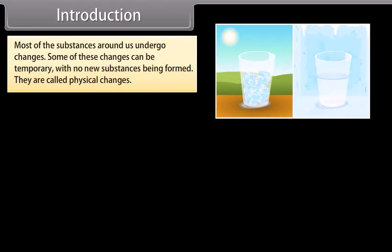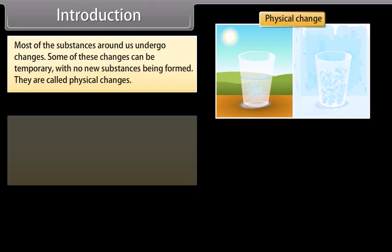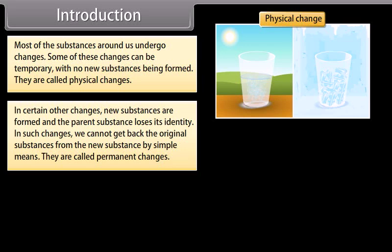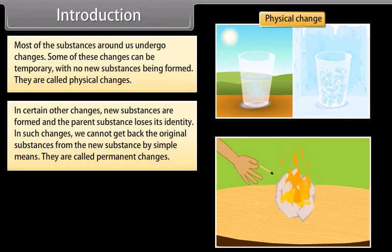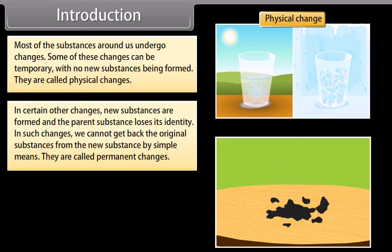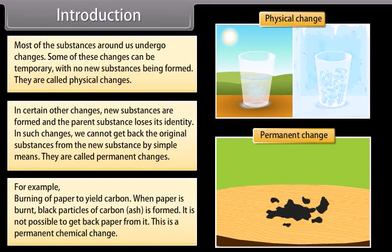Introduction: Most of the substances around us undergo changes. Some of these changes can be temporary, with no new substances being formed — they are called physical changes. In certain other changes, new substances are formed and the parent substance loses its identity. We cannot get back the original substance by simple means. They are called permanent changes. For example, burning of paper yields carbon — this is a permanent chemical change.